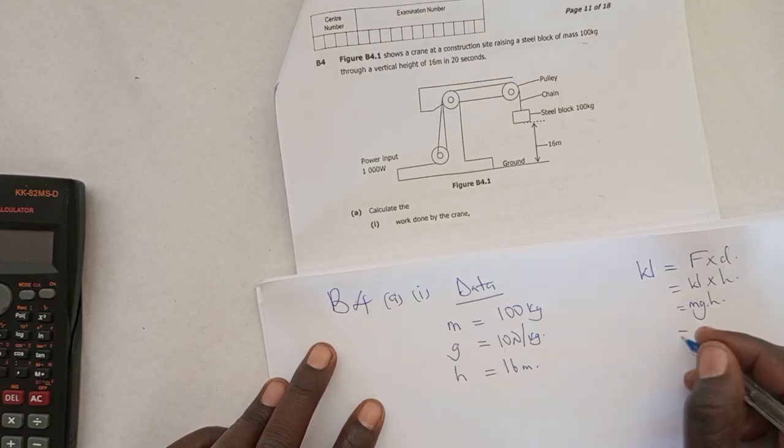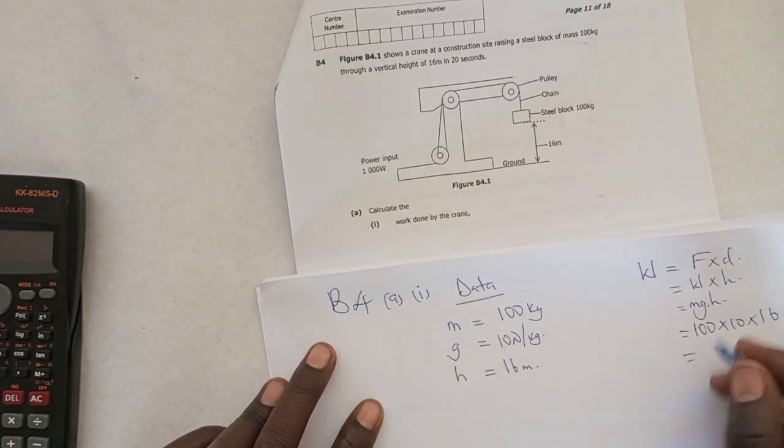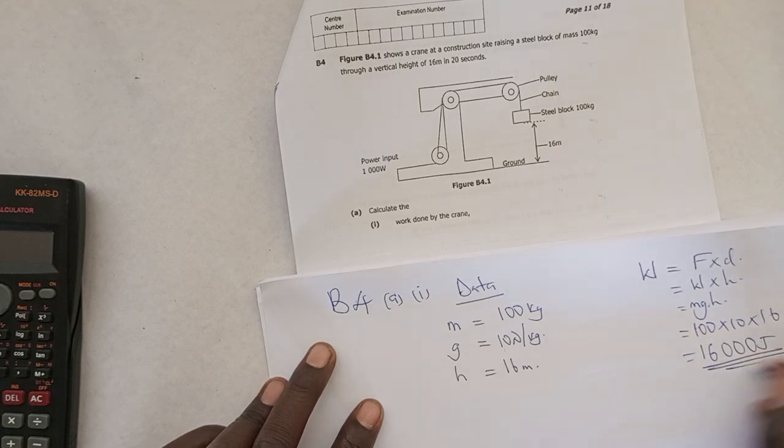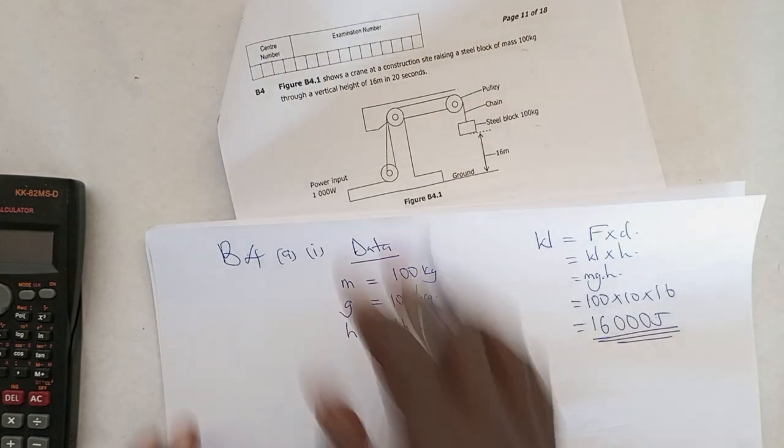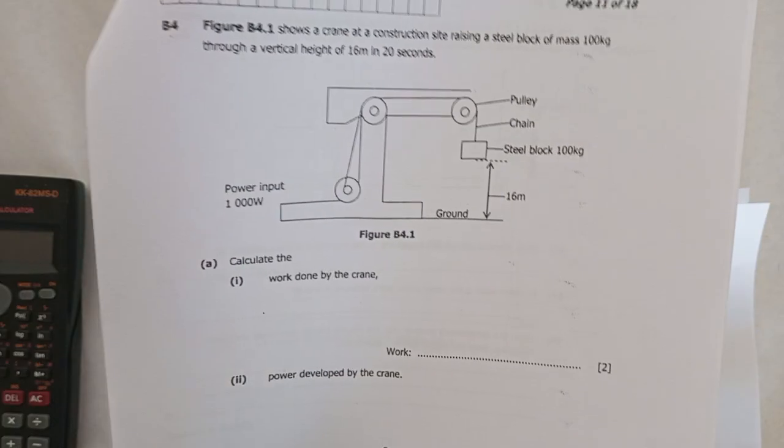Remember, our weight is mg and h being multiplied by weight, which is mg. So we can say, what is our mass? 100 times 10 times 16. The answer would be 16 with three zeros, and this is in joules. This is our work done for question B4A1.